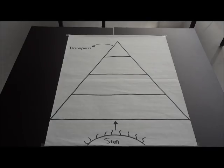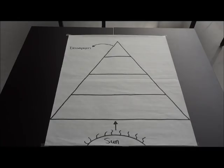We know that producers need to gain their energy from the sun. If we look at this diagram, we see that there is an arrow pointing from the sun to the bottom level of the pyramid. Knowing what an arrow represents in a food chain, we know that the energy is flowing from the sun to the bottom level. Therefore, the bottom level is our producers.